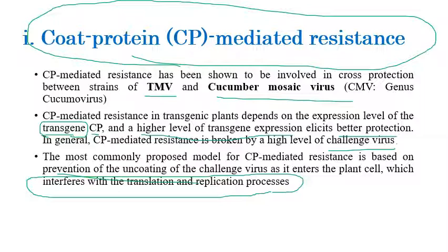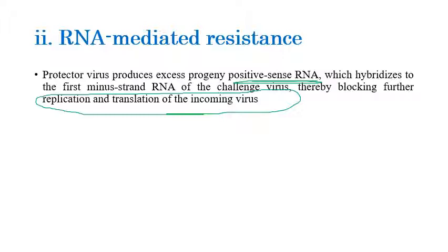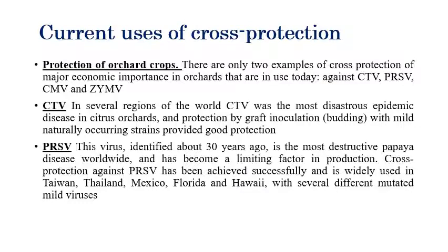The second mechanism is RNA-mediated resistance. The mild or protector virus already inoculated into plants produces progeny positive single-stranded RNA, which hydrolyzes the minus strand RNA of challenging viruses, thereby blocking their replication and translation. This RNA-mediated resistance mainly targets the replication and translation mechanisms — if translation is interrupted, the structural components required by the severe plant virus cannot be produced.